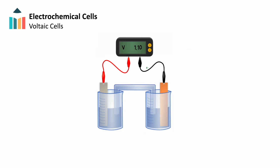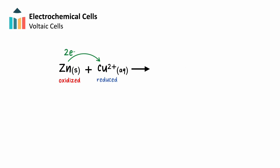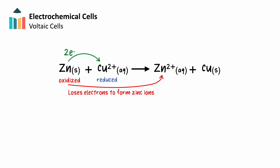The zinc-copper cell, which we've already seen, is a typical example of a voltaic cell. Zinc is more readily oxidized compared to copper, so when these metals undergo a redox reaction together, zinc will be oxidized and transfer electrons to copper ions. Zinc will become aqueous Zn²⁺, while the Cu²⁺ ions will be reduced — gaining electrons and forming solid copper.